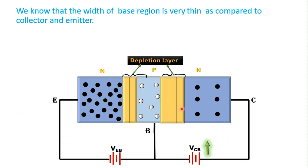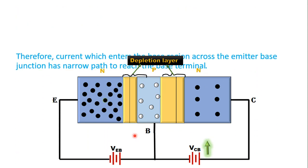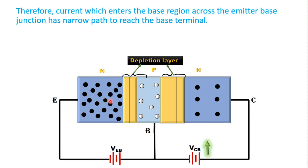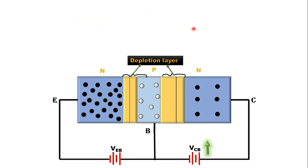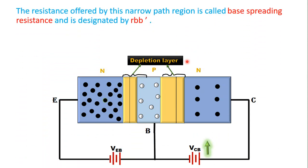We know that the width of the base region is very thin compared to the collector and emitter, as shown in the figure. Therefore, the current which enters the base region across the emitter-base junction has a narrow path to reach the base terminal. The resistance offered by this narrow path region is called base spreading resistance and is designated by RBB'.